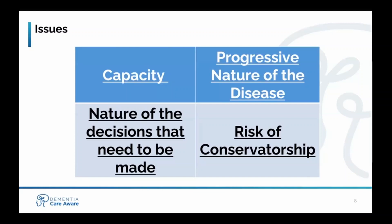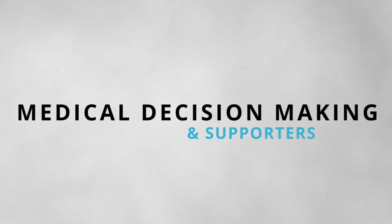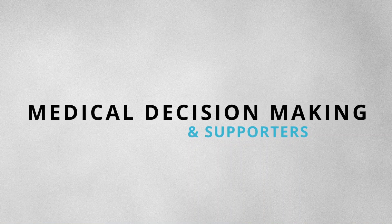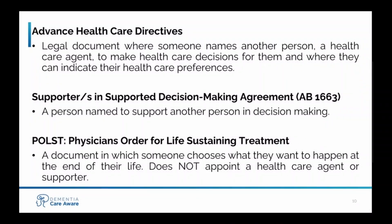If someone completes advanced care planning, this can help avoid the need for conservatorship and help streamline transitions of care. There are three types of medical decision-making tools. If someone has capacity, they can create an advanced health care directive — one of the most important advanced care planning tools. An advanced health care directive is a legal document that typically has two parts. The first part is the power of attorney for health care, where the patient chooses a health care agent — a trusted person who can make decisions for the person either immediately or when they can no longer do so themselves. The power can be broad or limited.